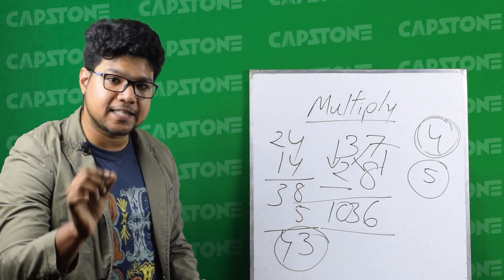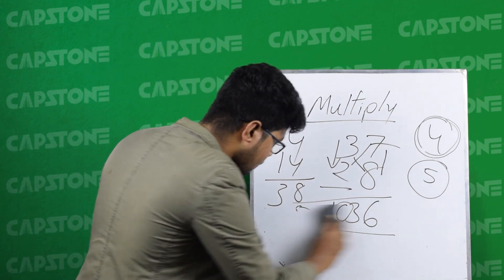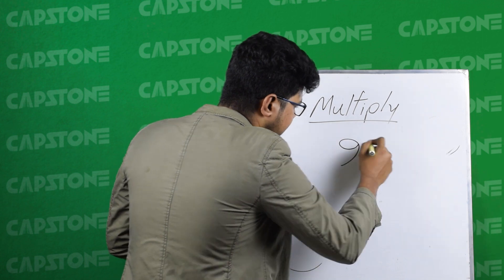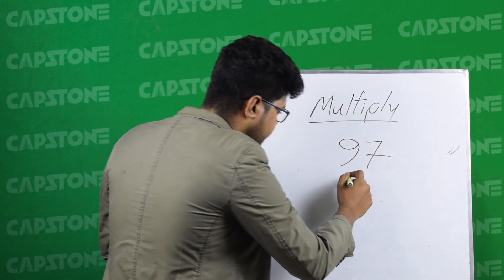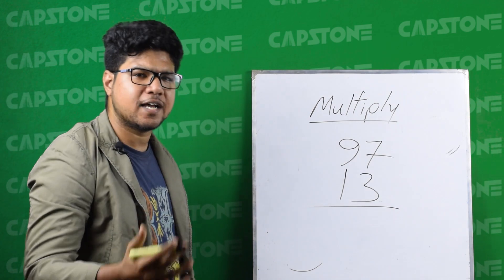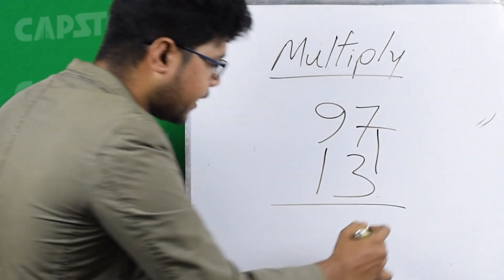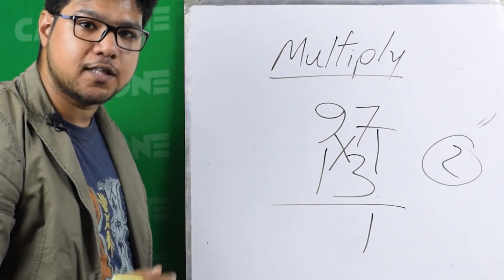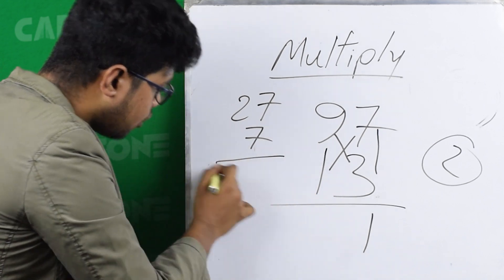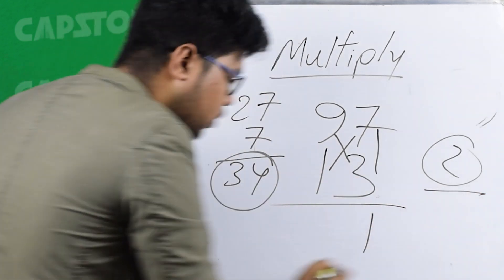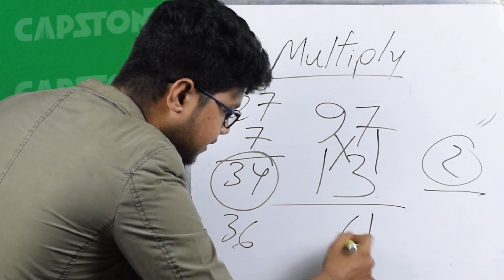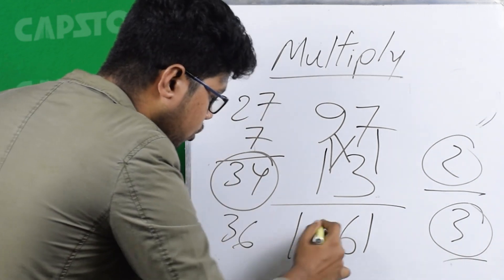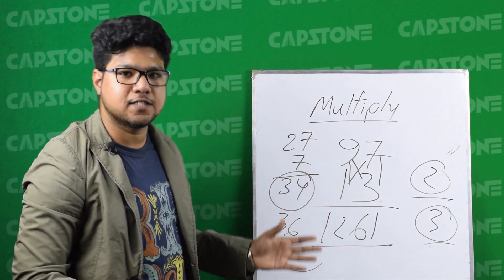Let's proceed with another example: 97 into 13. First I: 7 into 3 is 21, carry 2. Next X: 9 into 3 is 27, plus 7 into 1 is 7, so 27 plus 7 is 34, plus carry 2 is 36, carry 3. Last I: 9 into 1 is 9, plus carry 3 is 12. So the answer is 1261.